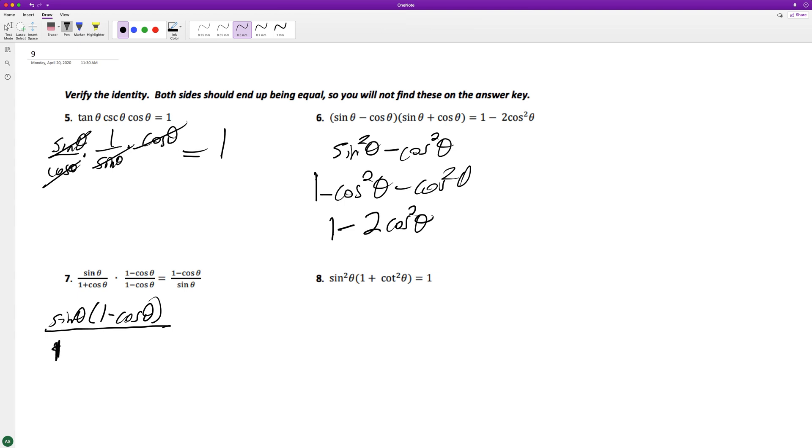And these middle terms become, or these two bottom terms become this. So we can convert the bottom into sine squared. So one of these cancels off, and we're left with 1 minus cosine theta over sine theta. And that's it for that one.